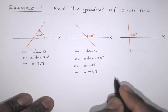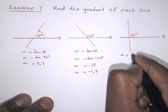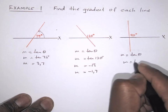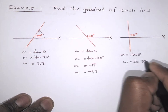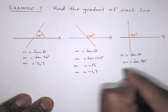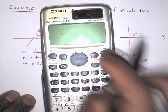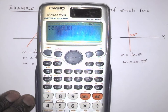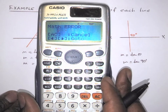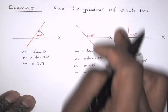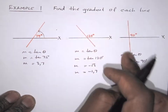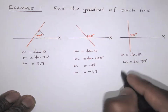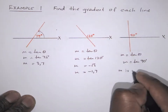Let's look at this one. So m equals tan of theta, so m equals tan of 90 degrees, because the angle is 90 degrees. If we look at the calculator, tan of 90 says error. It's because the line is vertical — it's so steep — therefore the gradient is undefined. Here we say m is undefined.